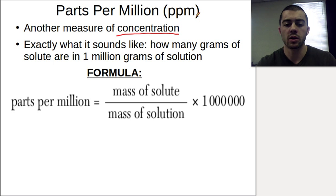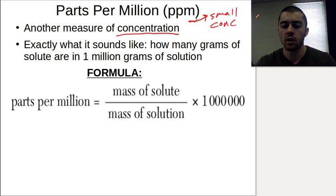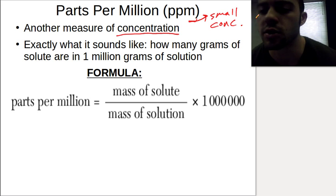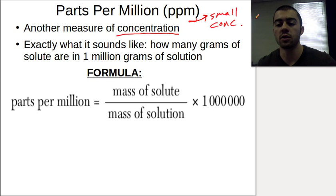Parts per million is used if we have a very small concentration of solute particles. We're talking about a few parts, or a handful of parts, per million parts of solution. So we're talking about a very small concentration when we use parts per million.